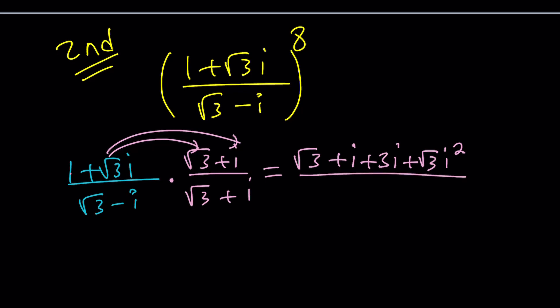And at the bottom, we have sum of two squares: 3 + 1, which is 4. So these two cancel out. And now we get 4i divided by 4, which is i.